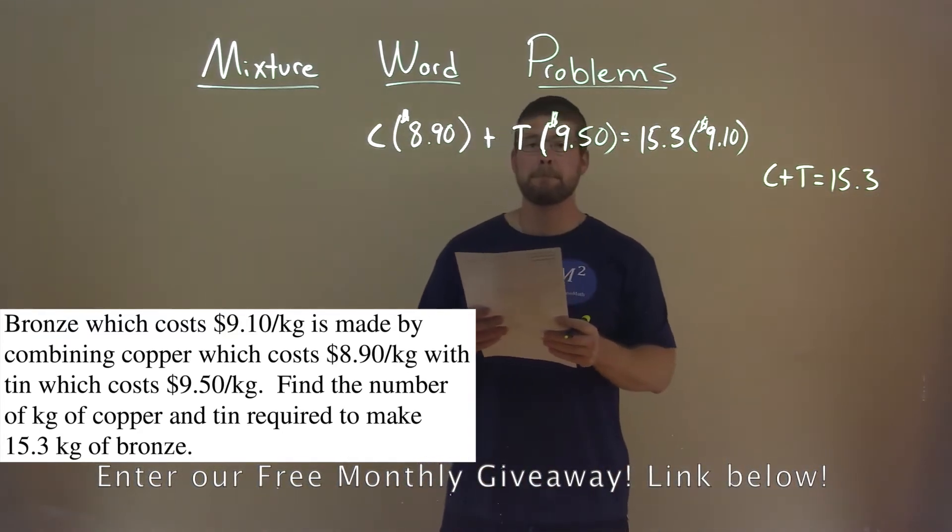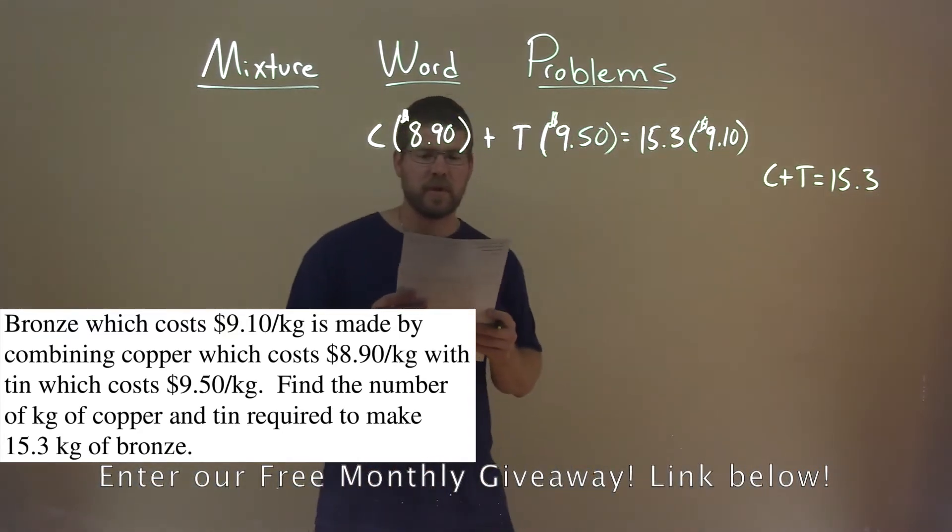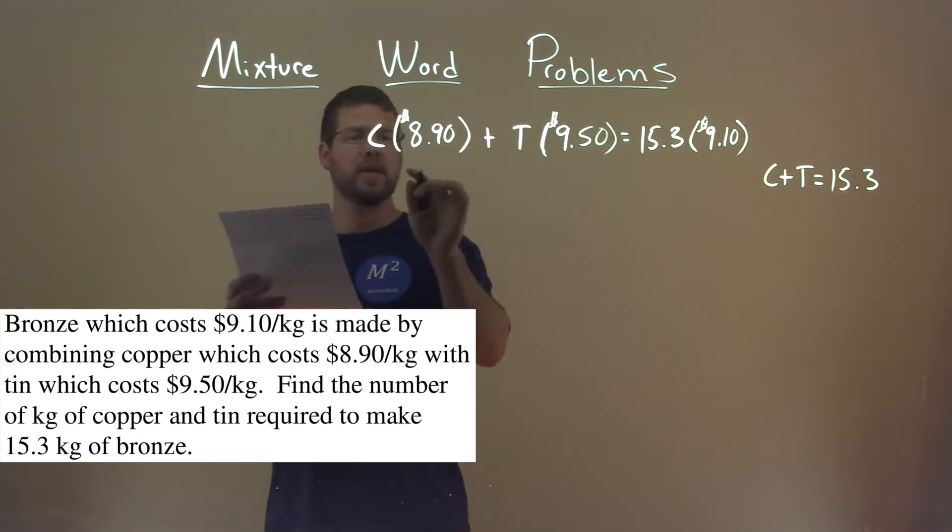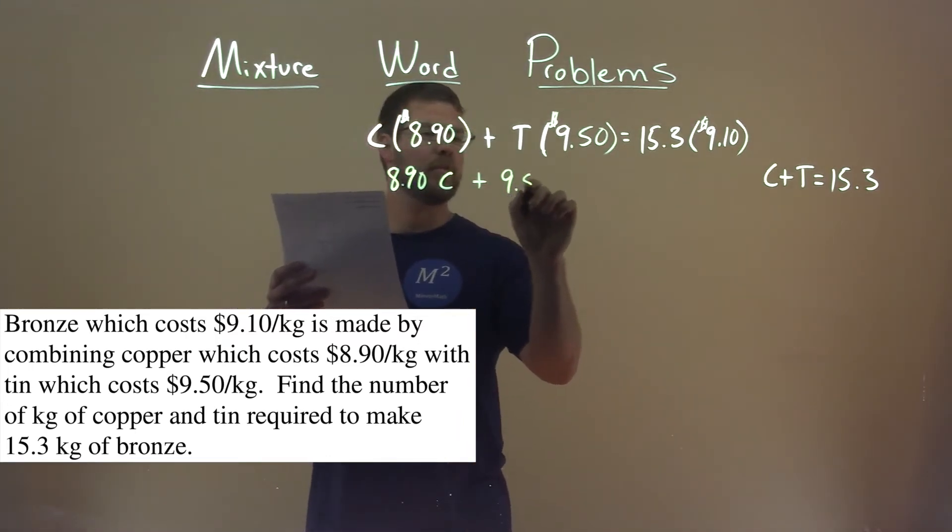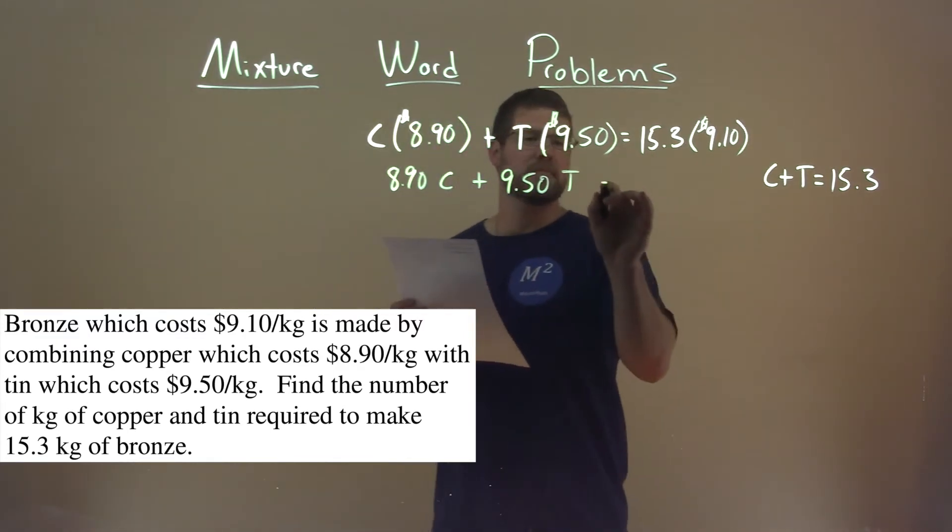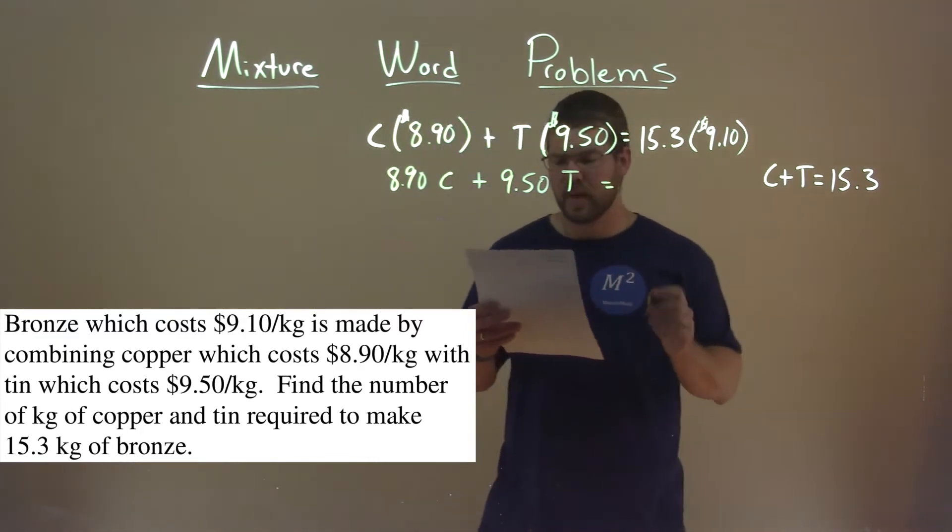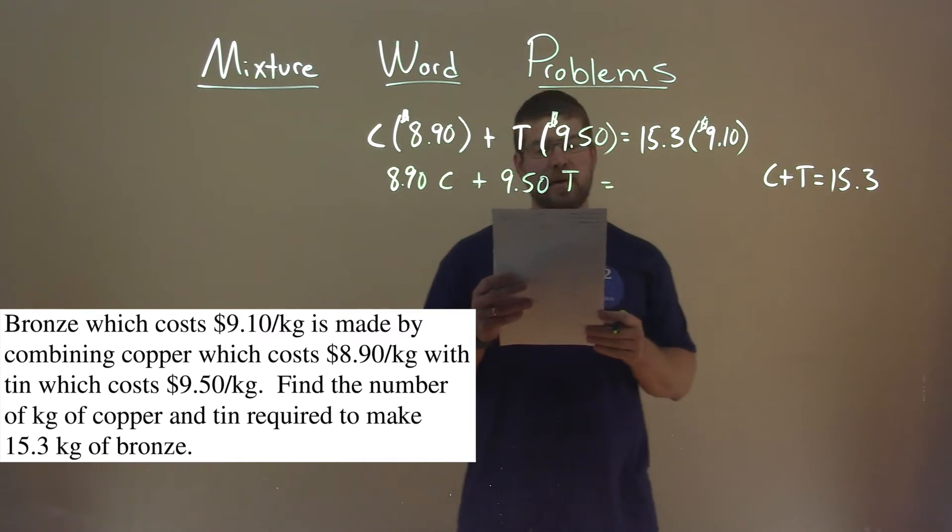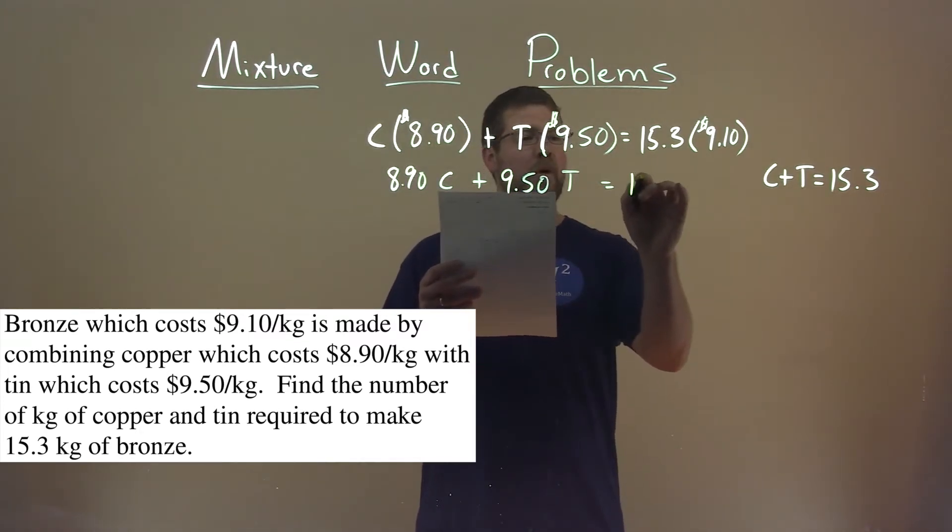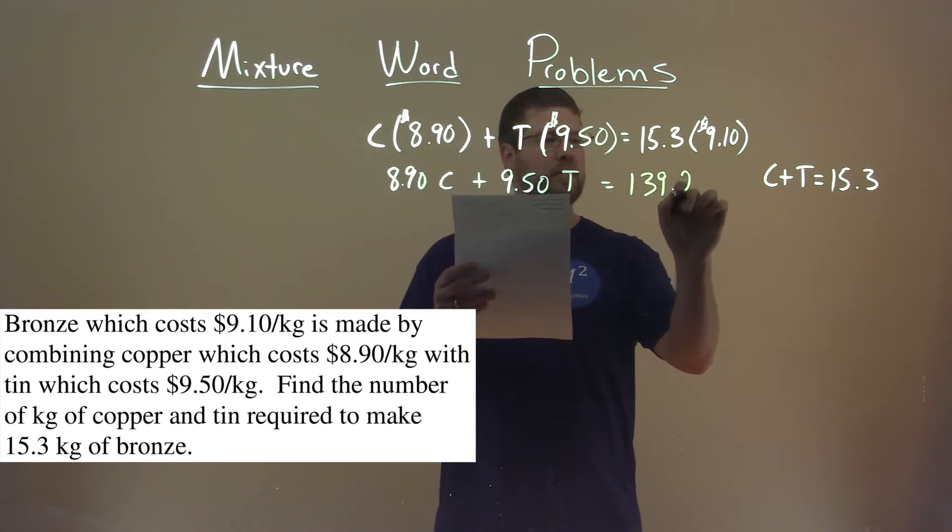Alright, so now let's go simplify where we can here. I'm going to rearrange this and put it first: 8.90 times C plus 9.50 times T, so it looks more like a system of equations. 15.3 times 9.10 is 139.23.